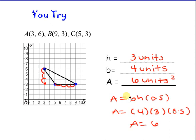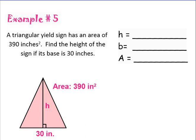The answer to this coordinate plane problem is 6 units squared. This one might have been a little more difficult to find the height. The base was straightforward, but for the height you have to go from the tallest point down to the lowest point — in this case, you had to go outside the triangle. You go 1, 2, 3, and stop at the lowest point, so it was 3 units for the height. So: 4 times 3 times 0.5.